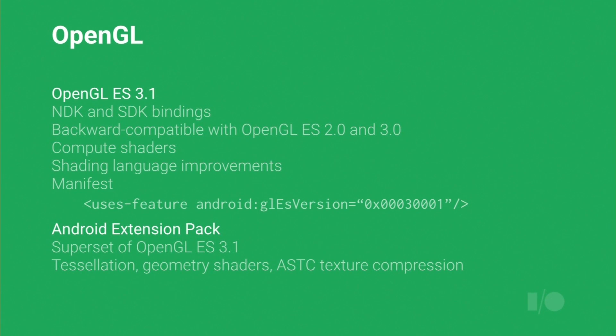On the graphics side, there's an update to OpenGL ES 3.1 with new compute shaders and new shader language capabilities. We have bindings in both SDK and NDK, and it's backward compatible with OpenGL ES 2 and 3. You can use the 'uses-feature' tag in your manifest to specify this version. We're also introducing the Android Extension Pack — a collection of powerful extensions that brings the platform up to the current state of console gaming hardware, including tessellation, enhanced geometry shaders, and texture compression.